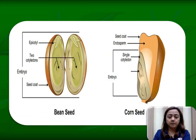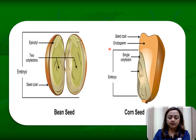In this diagram, I'm going to show you the parts of a seed. So here we have the bean seed and the corn seed. We have the seed coat, endosperm, the embryo, the cotyledon, and also the epicotyl. Now let's define the parts.